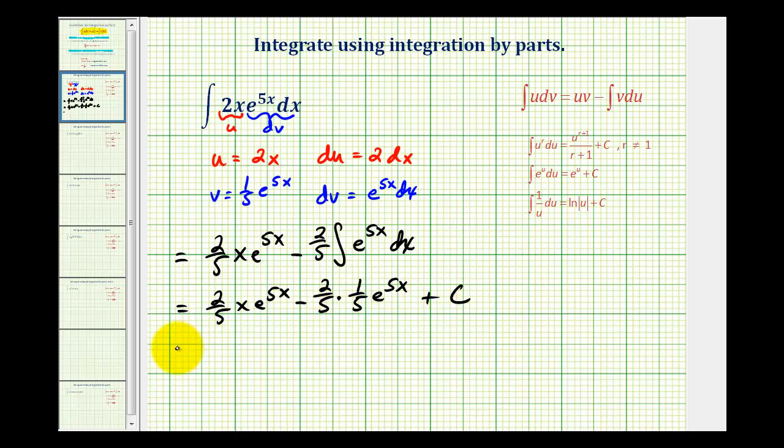Let's go ahead and determine this product here. So we have 2/5ths x e to the 5x minus 2/25ths e to the 5x plus c.